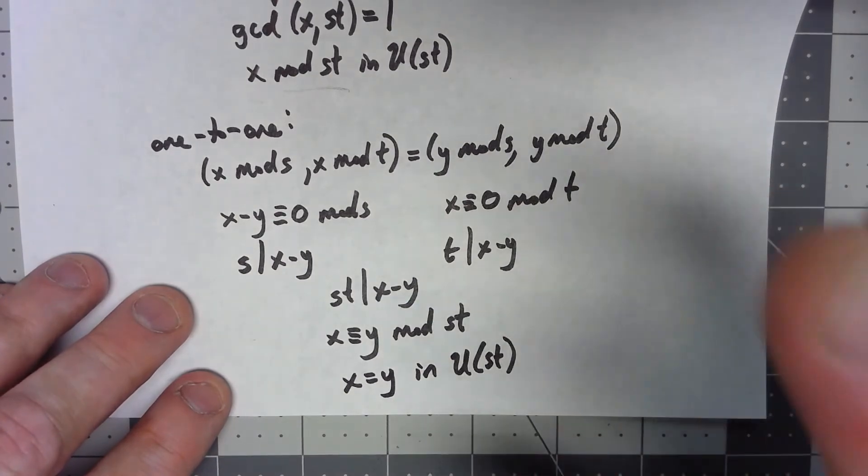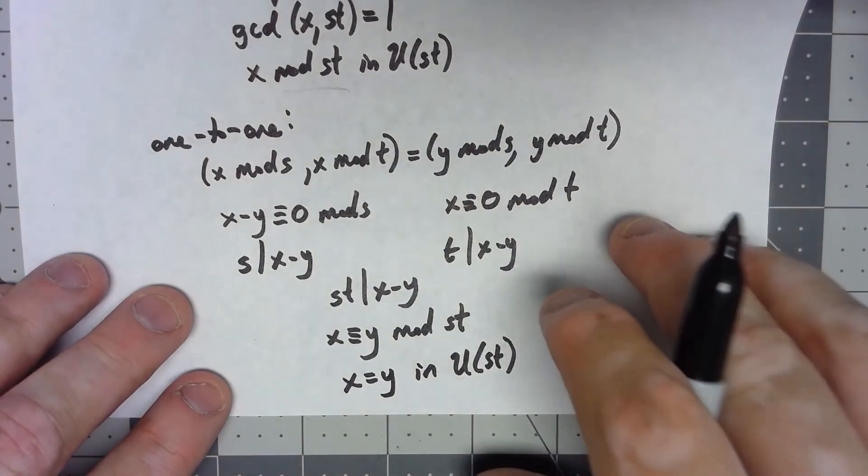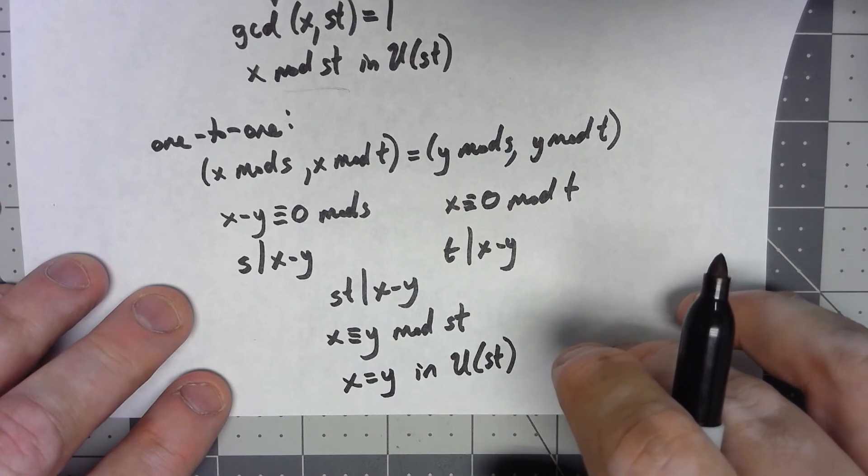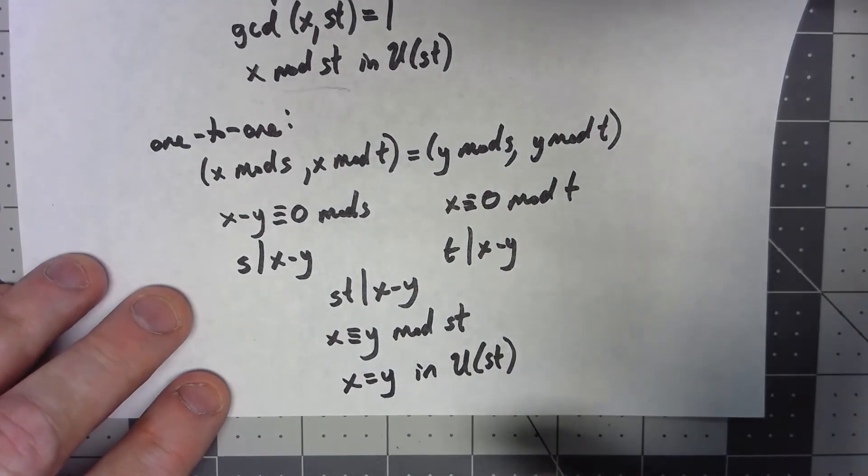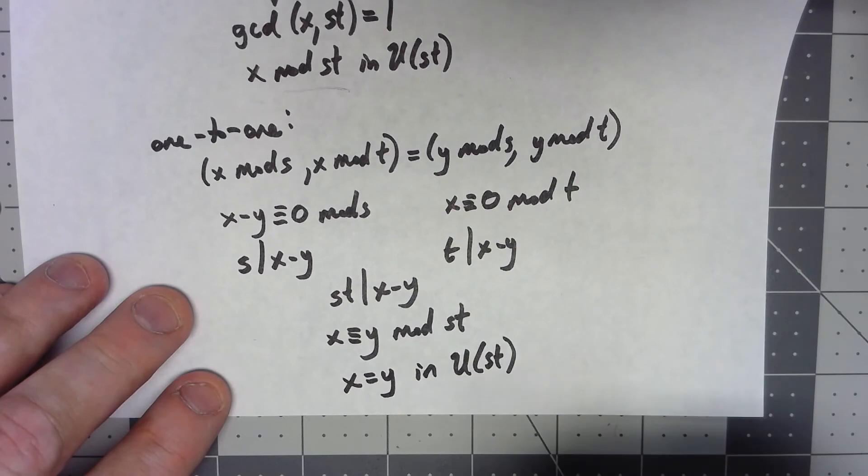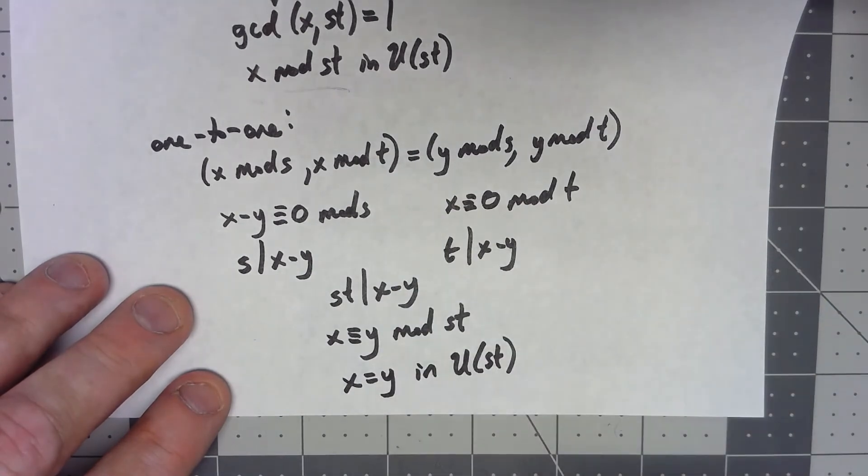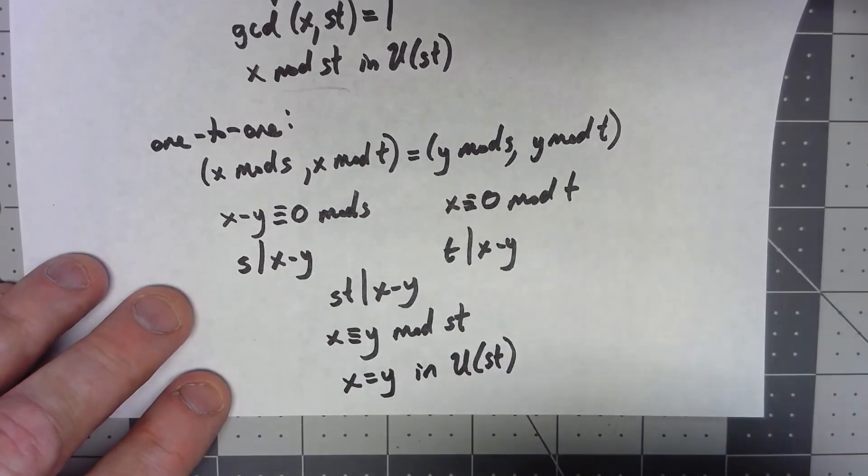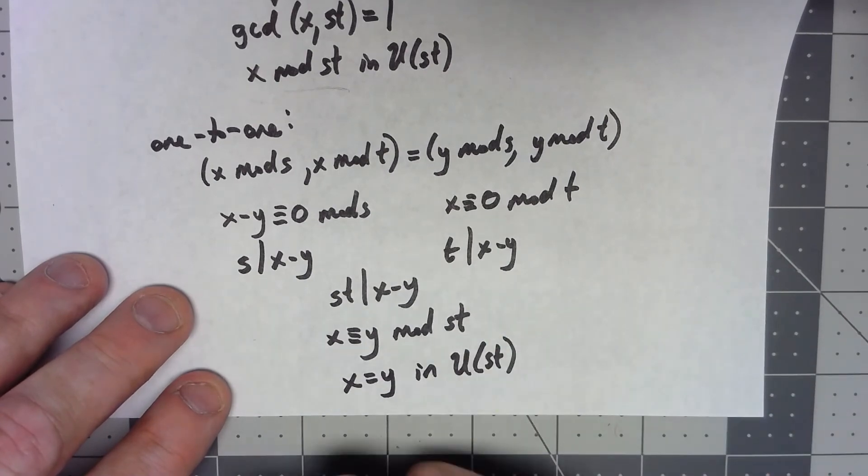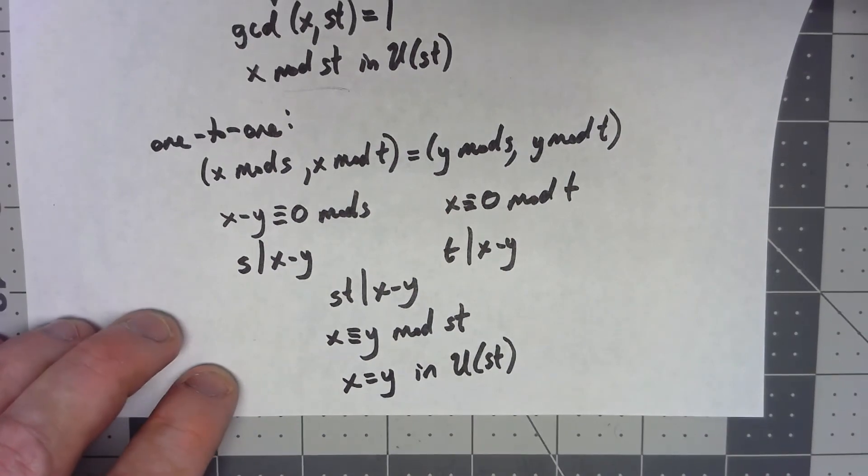Okay, last thing to show is that this has the homomorphism property. That one, I'm going to go ahead and leave for you to think about. But really, it's exactly what you would expect. Mods kind of work with the homomorphism property. So think about that for a bit, but I think you'll find that that's an easy property to show.